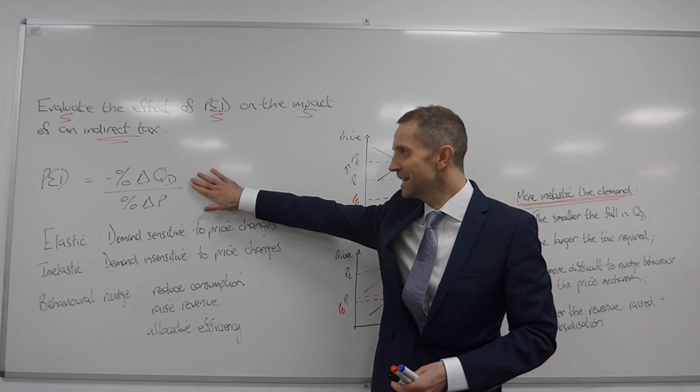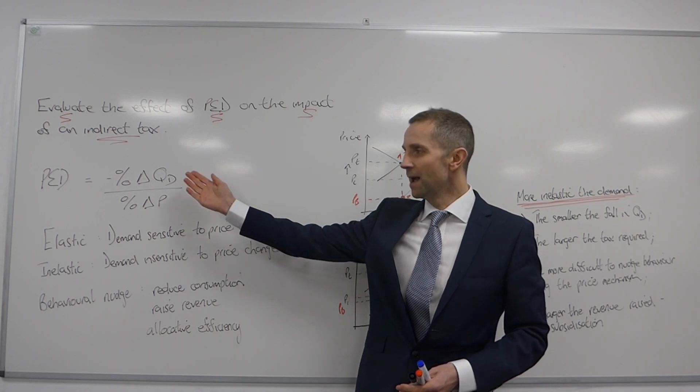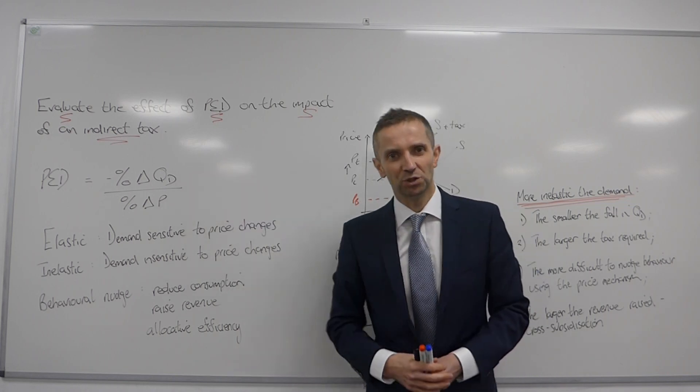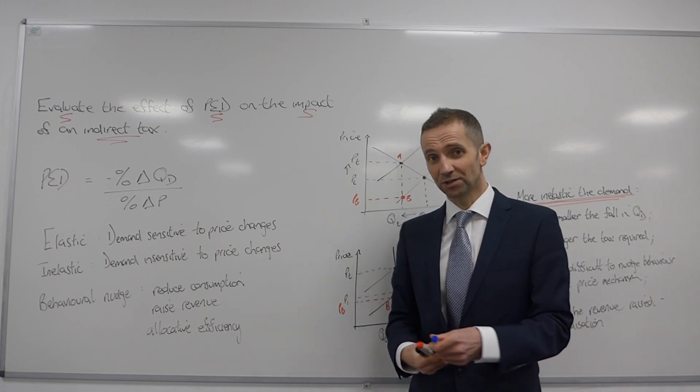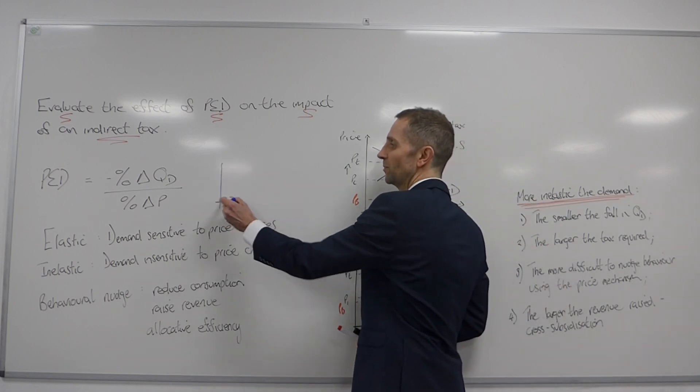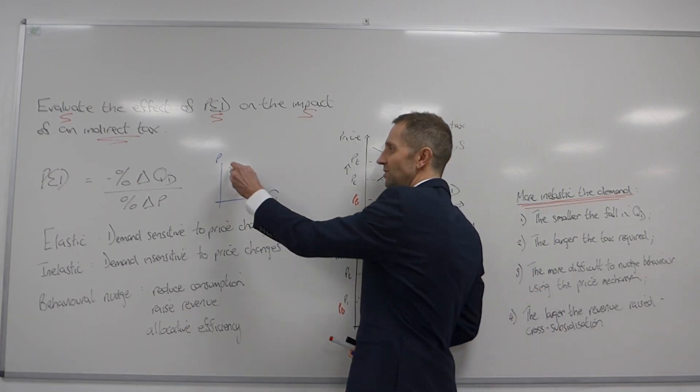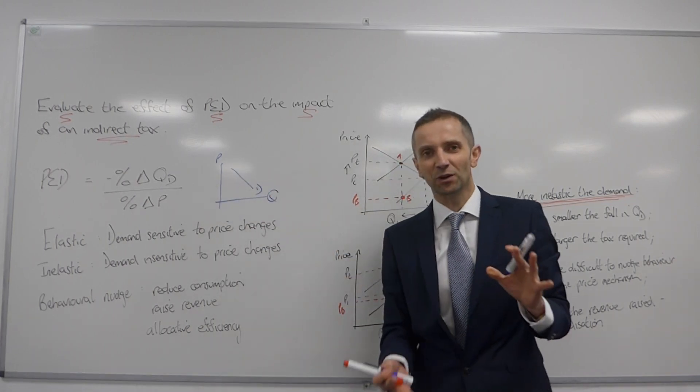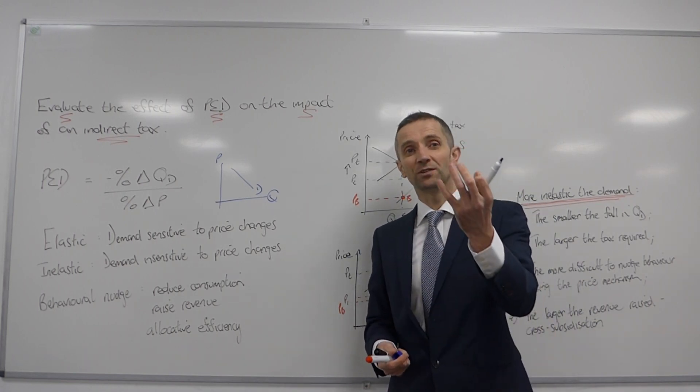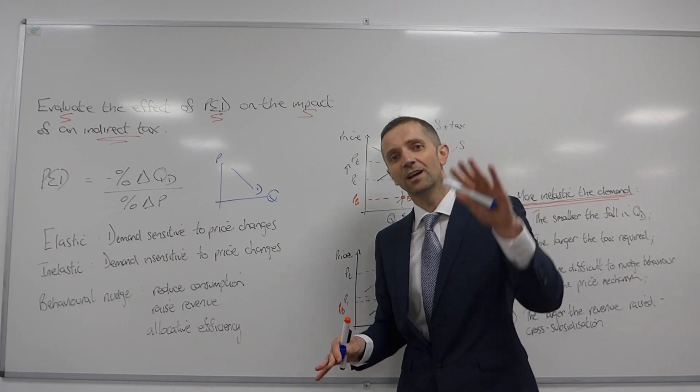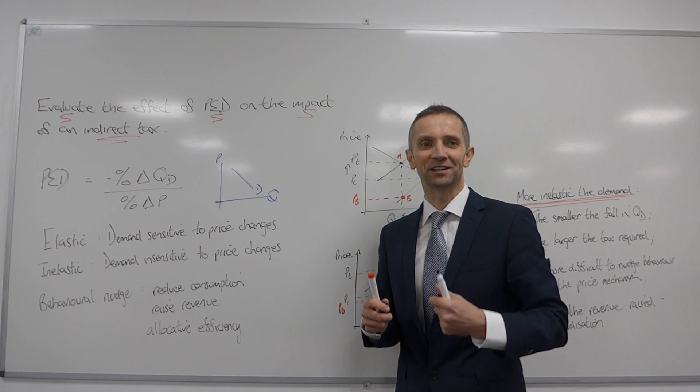So here we have the price elasticity of demand equation and remember it is minus percentage change in quantity demanded divided by percentage change in price. And you will no doubt be aware and recall why it's a minus. That is of course because of this inverse relationship between price and quantity demanded. As price rises quantity demanded falls. As price falls quantity demanded rises. Inverse ladies and gentlemen.